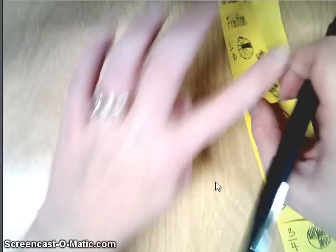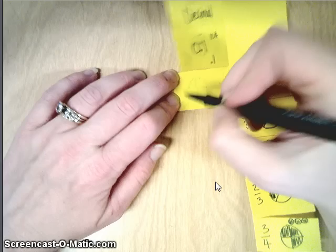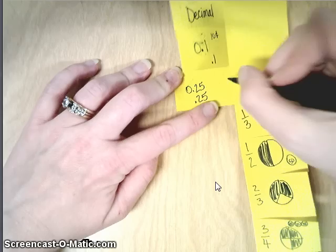The decimal form of one fourth, the value is a quarter in money, so that would be zero point two five or you might also see it as point two five, has a value of twenty-five cents.